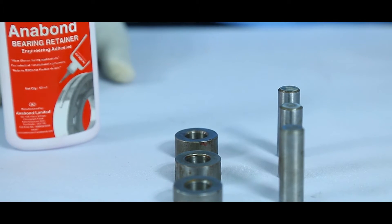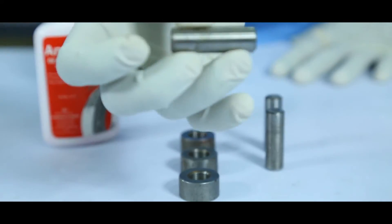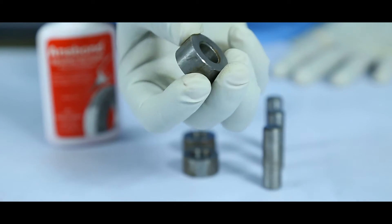We will use Anabond 412 on this pin and bush. This is the pin and here we have the bushes. These will be bonded using Anabond 412.